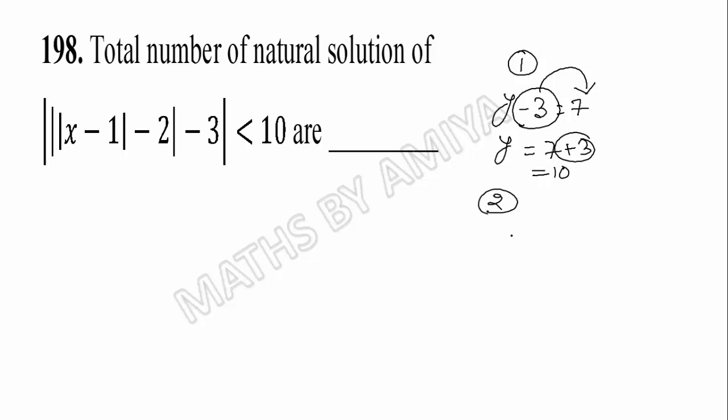Second thing: if we have mod x plus 1 is less than 5, we can say x plus 1 is either 5 or minus 5 with the same sign of inequality, because mod opens with two functions plus or minus. So mod x less than 5 is plus 5 or minus 5 with the same sign.